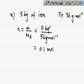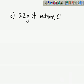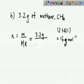How about (b)? 3.2 grams of methane, CH₄. The molar mass of CH₄ is 12 plus 4 times 1, so you get 16, so it's 16 grams per mole. Number of moles equals mass over molar mass. You have 3.2 grams divided by 16 grams per mole. Doing some calculation, you get 0.2 mole.